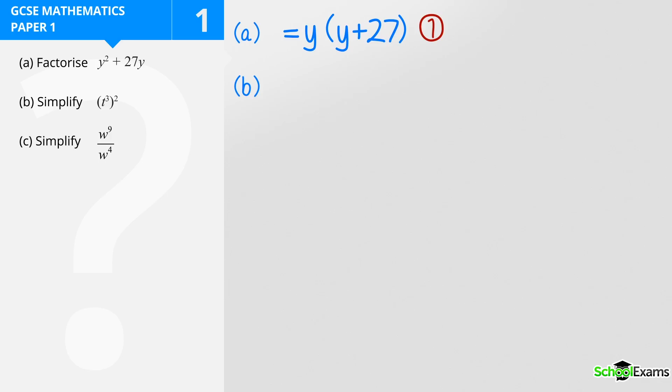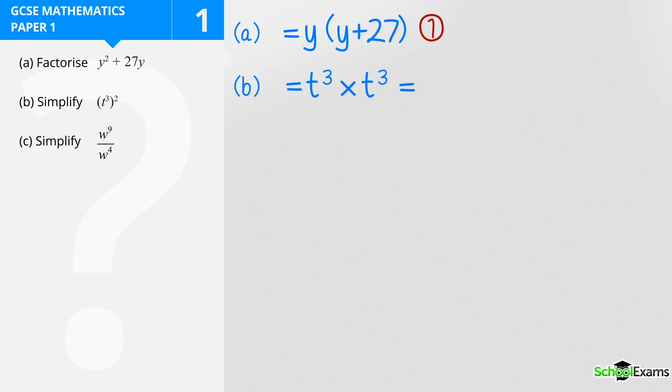Part B, simplify (t³)². There's two ways to do this. I'm going to do it the long way. I'm going to say that's equal to t³ × t³. Now you know with your laws of indices when you're multiplying you add those two indices. So my final answer is going to be t⁶ because three plus three makes six.